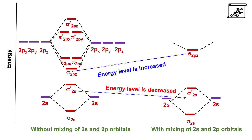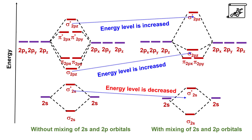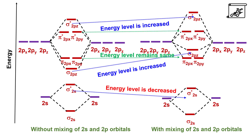But the energy of the 2s orbitals is decreased and the energy of the 2p orbitals is increased. So the energy of the sigma 2pz bonding molecular orbital is increased, and with that, the energy of the antibonding sigma star 2pz orbital is also increased. Since 2px and 2py orbitals are involved in pi bonding and do not match in symmetry with the 2s orbitals, they do not participate in mixing. Therefore the energy levels of pi 2px, pi 2py, pi star 2px, and pi star 2py remain the same. Thus, for boron, carbon, and nitrogen, we must consider the molecular orbital diagram with mixing of 2s and 2p orbitals.